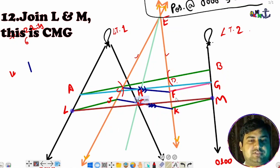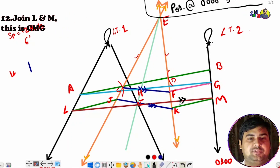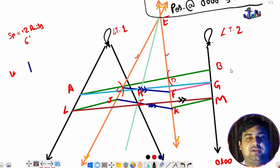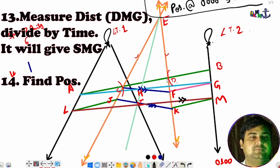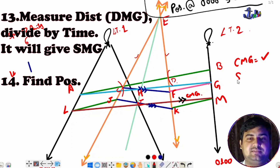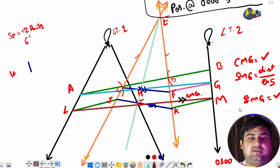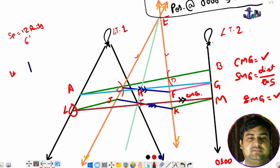The line L to M is your Course Made Good (CMG). For SMG (Speed Made Good), you measure the distance and divide by the time to get speed made good. Positions: at 0100 hours, at 0000 hours, and at 0030 hours can all be read from the chart — this is the 0000 PL position, the 0030 PL position, and the 0100 position.